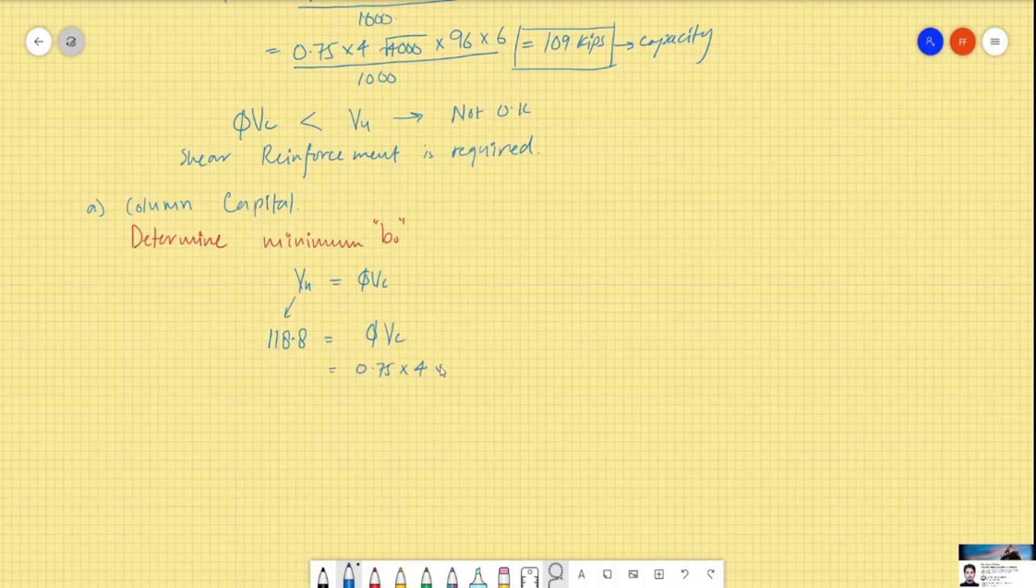And as our formula, phi Vc is 0.75 times 4 times square root 4000 times b0 times d. So b0 we have to find, and this comes out to be 104.5 inches. Our previous b0 was 96 inches.